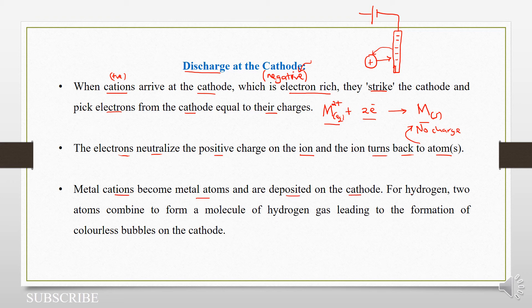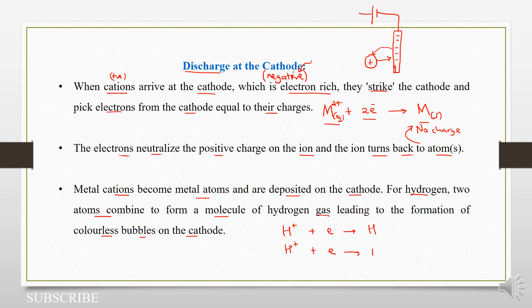For hydrogen — remember hydrogen is a bit tricky — two atoms combine to form a molecule of hydrogen gas, leading to colorless bubbles on the cathode. So hydrogen ions, when they reach the cathode, will pick an electron to form hydrogen atoms. When two of these occur, these two will then combine to form hydrogen gas.